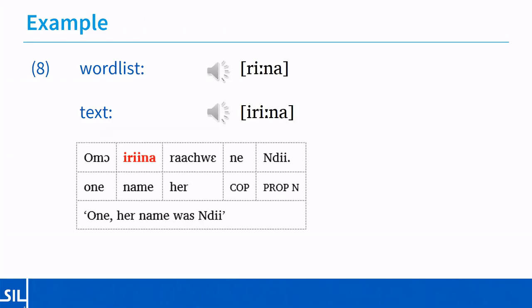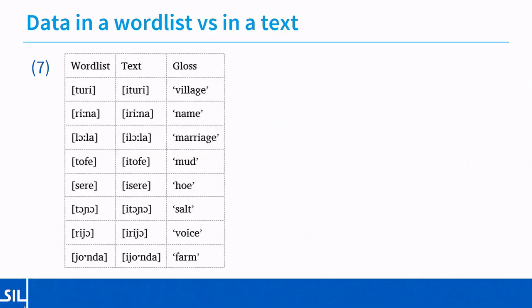Here are some examples in different contexts. The first column shows pronunciation as recorded in the word list, and the middle column shows pronunciation in a longer stretch of text — restricted to recorded stories and sentences rather than translated texts, so the speaker isn't influenced by spelling decisions. There's no E in the word list pronunciations, but each time it was audible when the word appeared in a longer text. For example, the word 'rina' meaning 'name' — as part of a word list, it sounds like just two syllables: 'rina'. But in the sentence, you can hear an E at the beginning of the word.